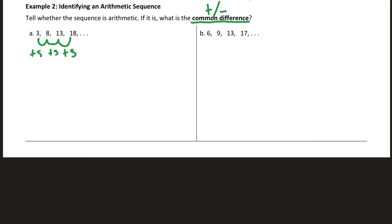So this is arithmetic. And our common difference, D, I'm going to use the variable D to represent the common difference. The common difference in that sequence is 5.